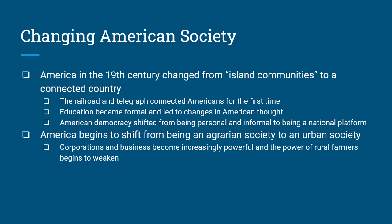The railroad is connecting cities all over the country, and wherever the railroad lines go, the telegraph lines go as well. The telegraph was the internet of the day — now you could get news cross-country in a matter of minutes instead of days. Education also becomes formalized, and everybody is supposed to have a rudimentary education by the end of the 1800s, helping formulate a unique American ideal.